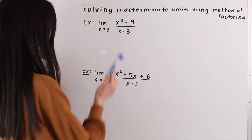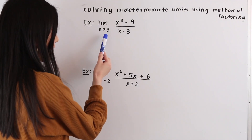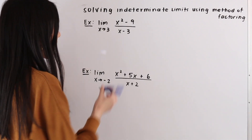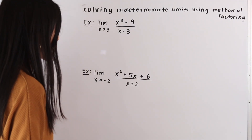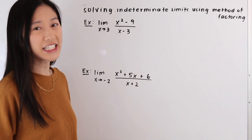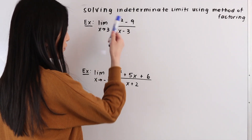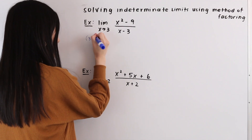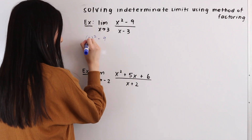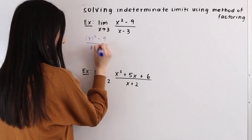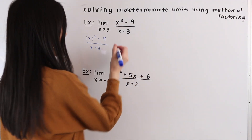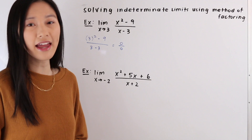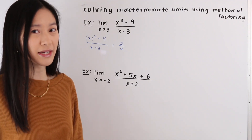In this first example we have the limit as x approaches 3 of the function x squared minus 9 over x minus 3. The first thing that we always do when solving a limit problem algebraically is plug in the value for a into our function f of x. So when we do that we have 3 squared minus 9 over 3 minus 3, which equals 0 over 0 — an indeterminate form — which tells us we need to use another method to solve this limit.